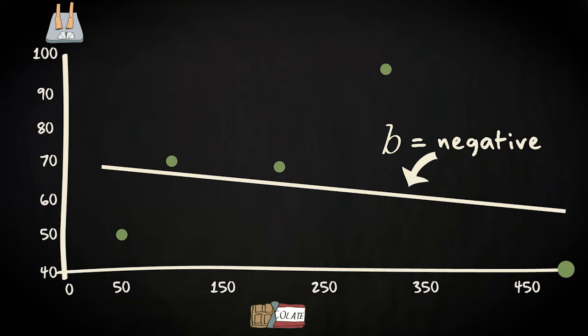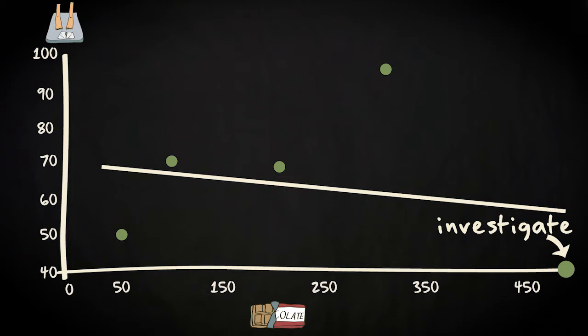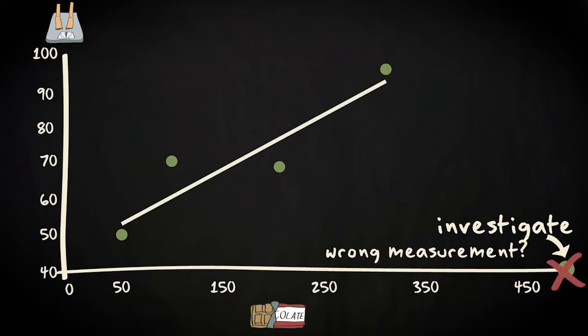Especially when you only have a few cases in your analysis, outliers can have a large impact on your findings. If you see outliers, you should always investigate what's going on. If you have good reasons to suspect that the outlier is the result of wrong measurement, you might want to decide to delete the case from your sample.